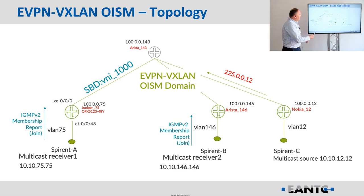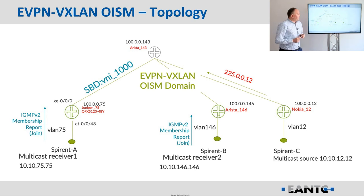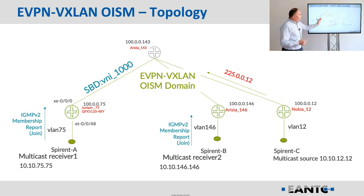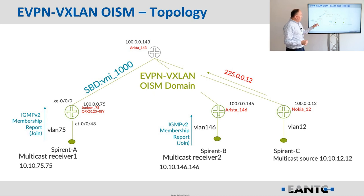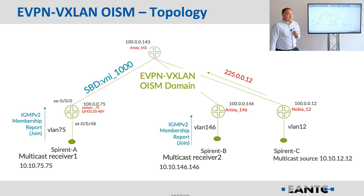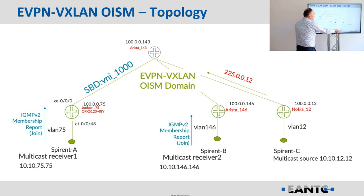As you can see in the diagram, we have specific bridge domains for each of the leaf devices. Nokia is not expected to know, for example, the MAC addresses of the multicast receivers, because the bridge domains are specific to the given top-of-rack leaf device. On the other hand, the information it gets from the Arista and Juniper devices is leveraged by the SBD concept. Whenever there is an interest to receive this traffic — when a host registers to that multicast group — the IMET routes as well as SMET routes are generated within that common SBD bridge domain. Once Nokia gets that information, only at that moment is the multicast feed sent to the right leaf device.